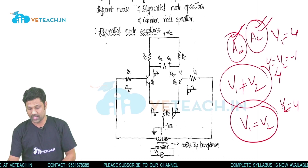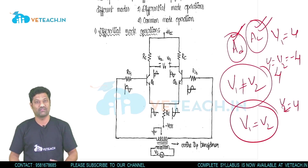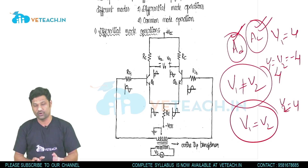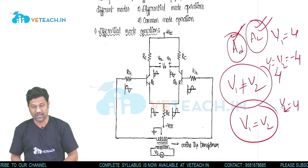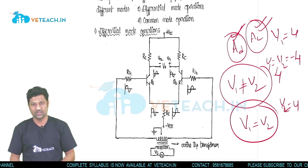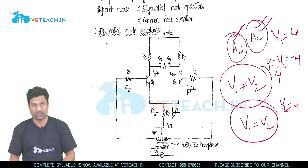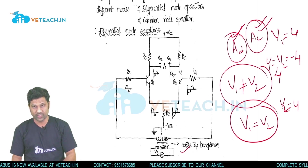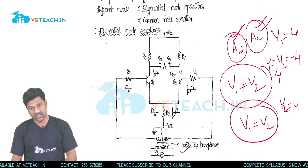Even though V1 and V2 are equal in magnitude, they are opposite in phase — one is positive and the other is negative. For simplification, we use a single value that is equal in magnitude but opposite in phase, using a center-tapped transformer. The center-tapped transformer produces two signals which are equal in magnitude but opposite in phase.